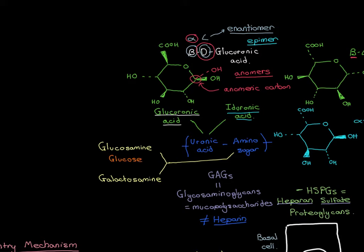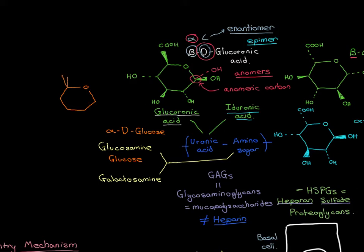Let's discuss the structure of glucose, drawn here in orange. It has a six-membered ring with an oxygen at the top. Since we're not talking about uronic acid sugars, the sixth carbon has an alcohol group rather than a carboxylic acid. The major form of glucose is strictly called alpha-D glucose, meaning the sixth carbon comes out of the page towards us. That's what the D tells us — if it went into the page it would be L.